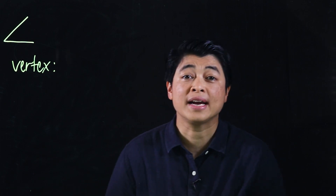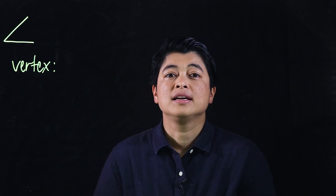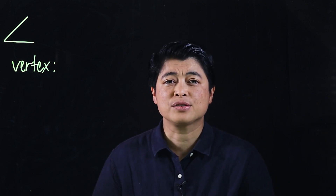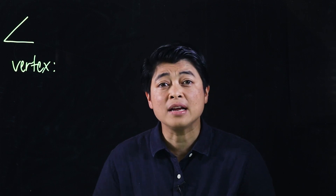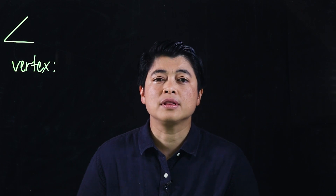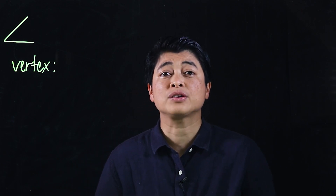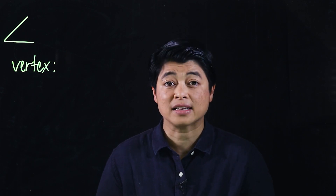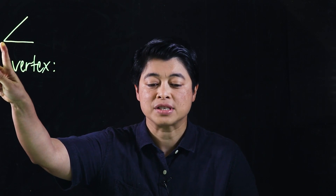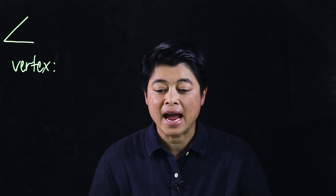The vertex is where the two lines that form the angle will intersect. Each angle could be named differently — one angle could have two or three names depending on how it's drawn out. If an angle is named with three letters, the middle letter is the vertex.